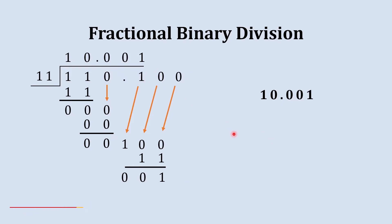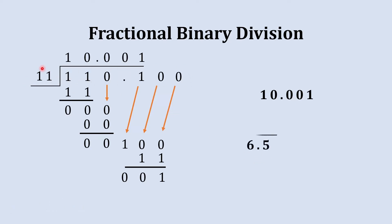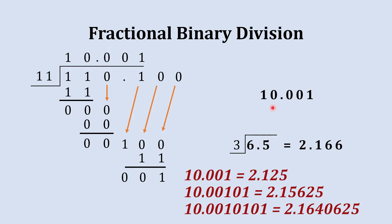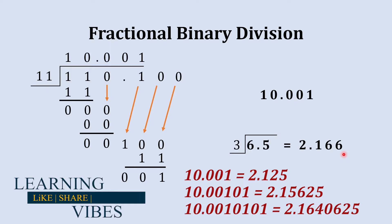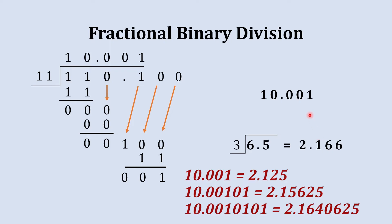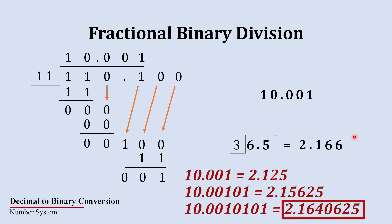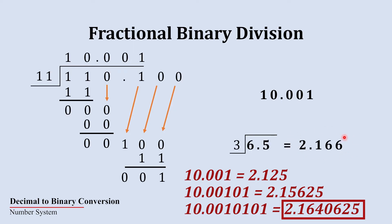To verify this: the decimal equivalent of our dividend is 6.5 and of our divisor is 3. So 6.5 divided by 3 gives 2.166. If you convert this binary quotient into decimal you will get a number close to 2.166. You may not get exactly 2.166 because after the binary point we have taken accuracy of only 3 digits. If you take 6 or more digits of accuracy then you will get a closer answer.